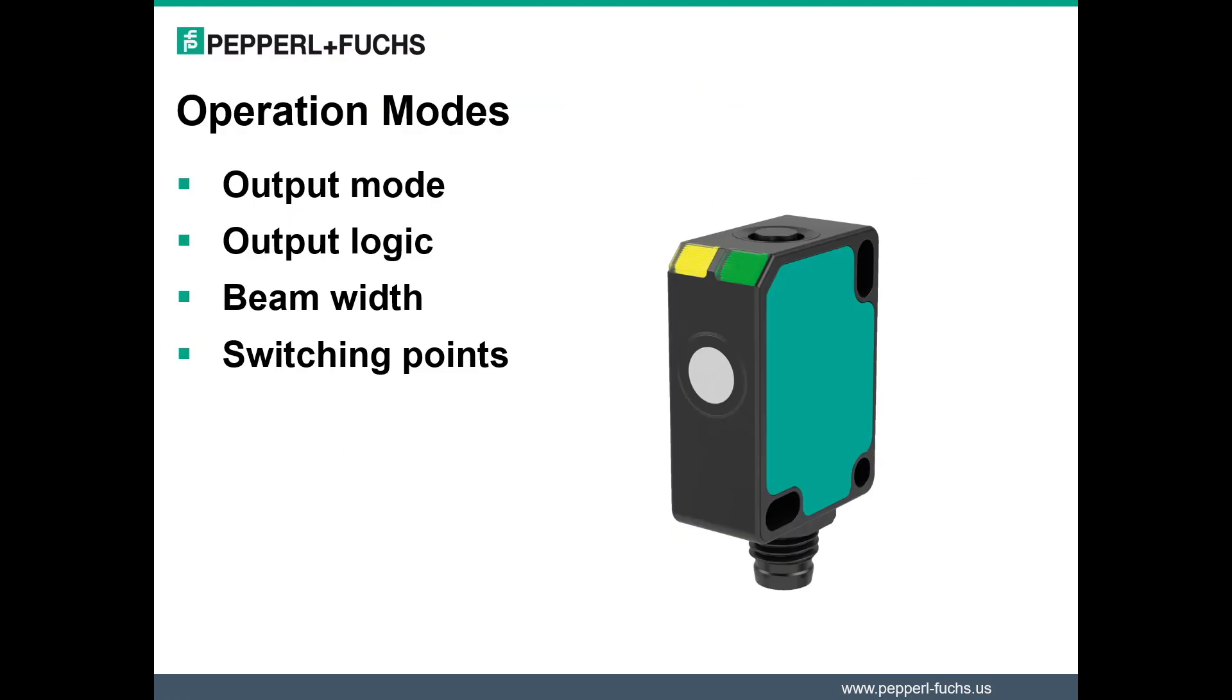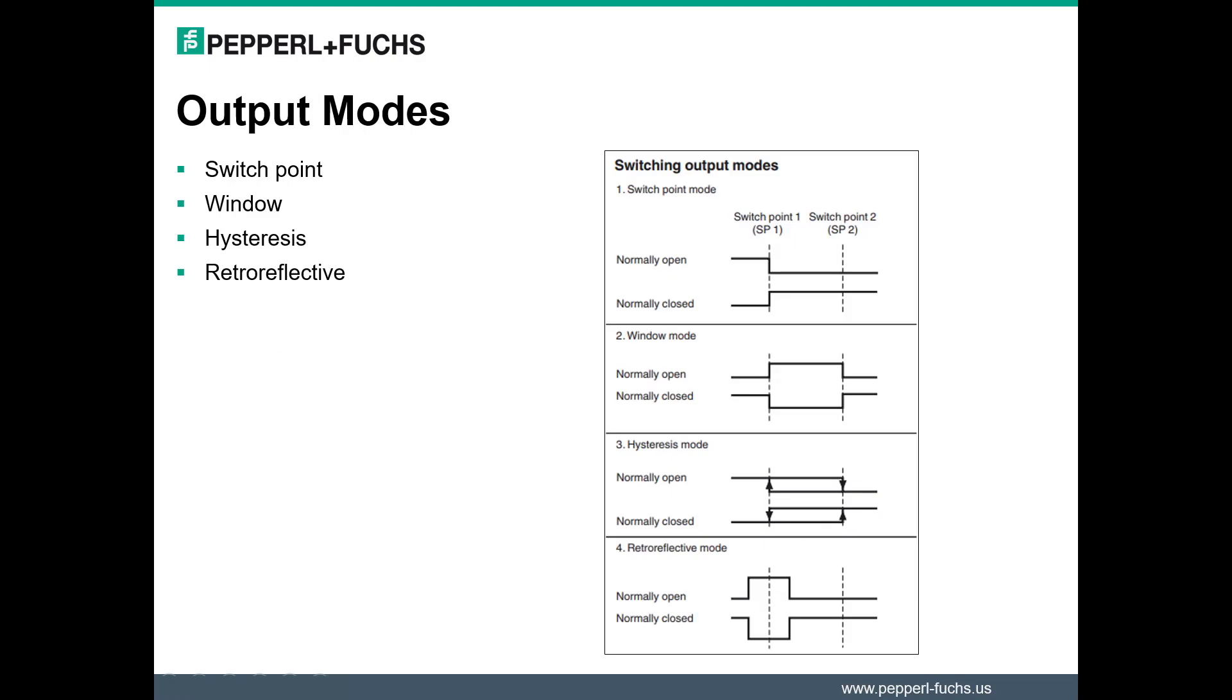The F77 ultrasonic sensor offers four operation modes. These modes include output mode, output logic, beam width, and the switching points for the sensor. First, we will cover the output modes available on the sensor. The four output modes are switch point mode, window mode, hysteresis mode, and retro reflective mode.